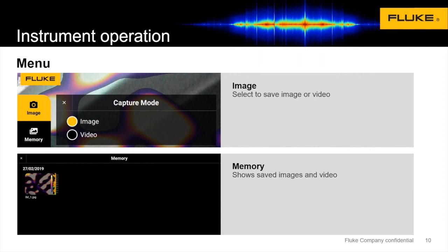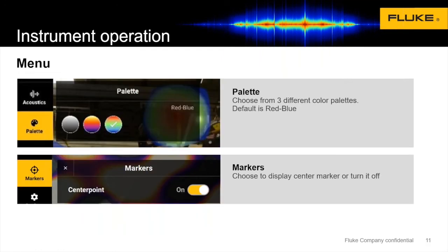Here's a quick view of the different modes we already talked about: switching between images and video, going into your memory, and changing your color palette. Whatever's easier for your eye to pick up on — and for those of us who are colorblind and do better with a grayscale, that's an option as well.